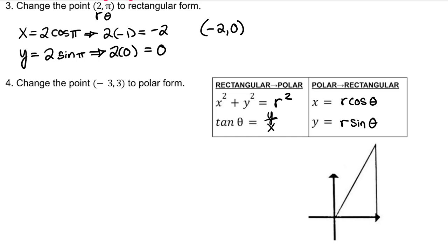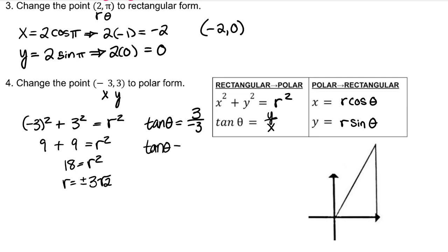Now let's change the point negative 3, 3 to polar form. We've been given x and y. We need to find r and theta. First, we'll use x squared plus y squared equals r squared. Tangent is equal to negative 1 in the second quadrant and the fourth quadrant at the pi-fourths angles there.